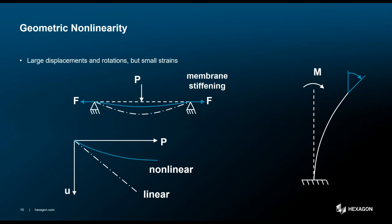Geometric non-linearity involves problems with large displacements and rotations, in contrast to the small displacements seen in linear analysis. Two types of phenomena are possible: large displacement with small strain, and large displacement with large strain. For the large displacement, small strain case, changes in the stress-strain law can be neglected, but the non-linear terms in the strain-displacement relationship cannot. Classic examples are flat membranes that stiffen as they're pressed, post-buckled structures, and follower forces that change direction as the structure rotates.